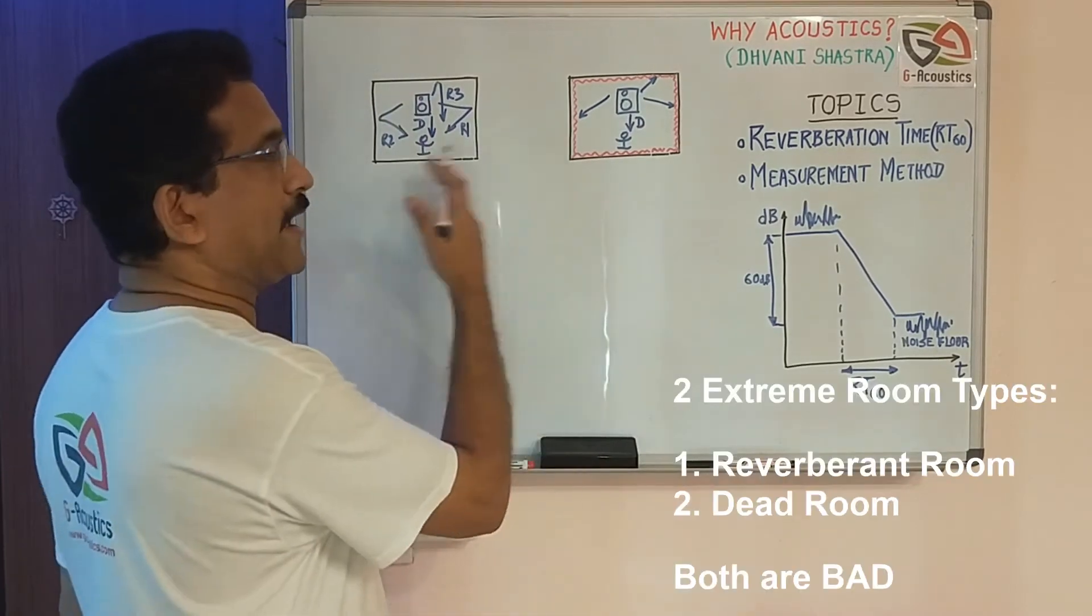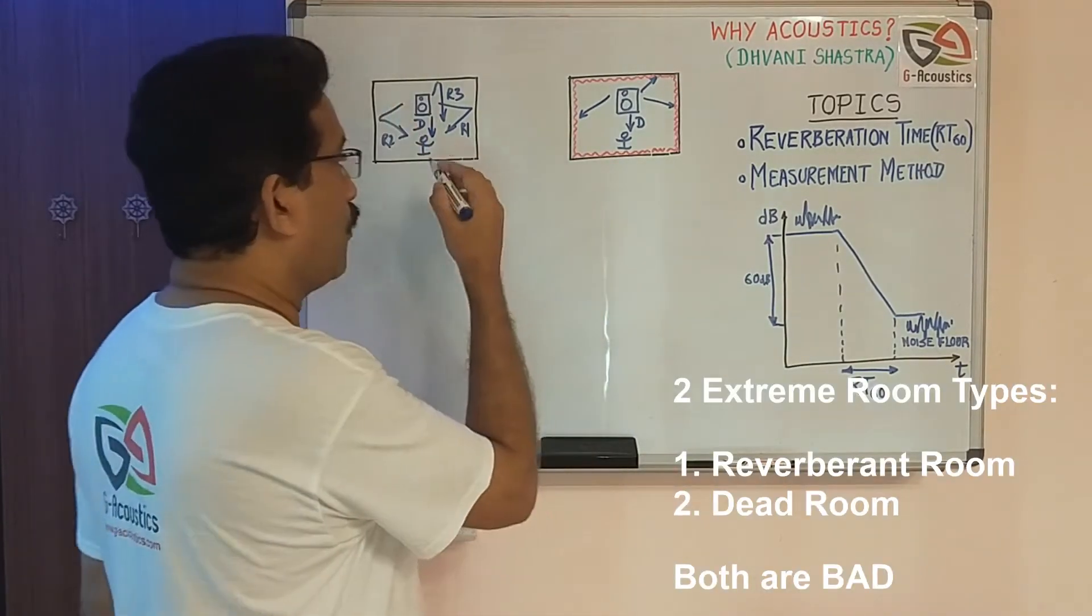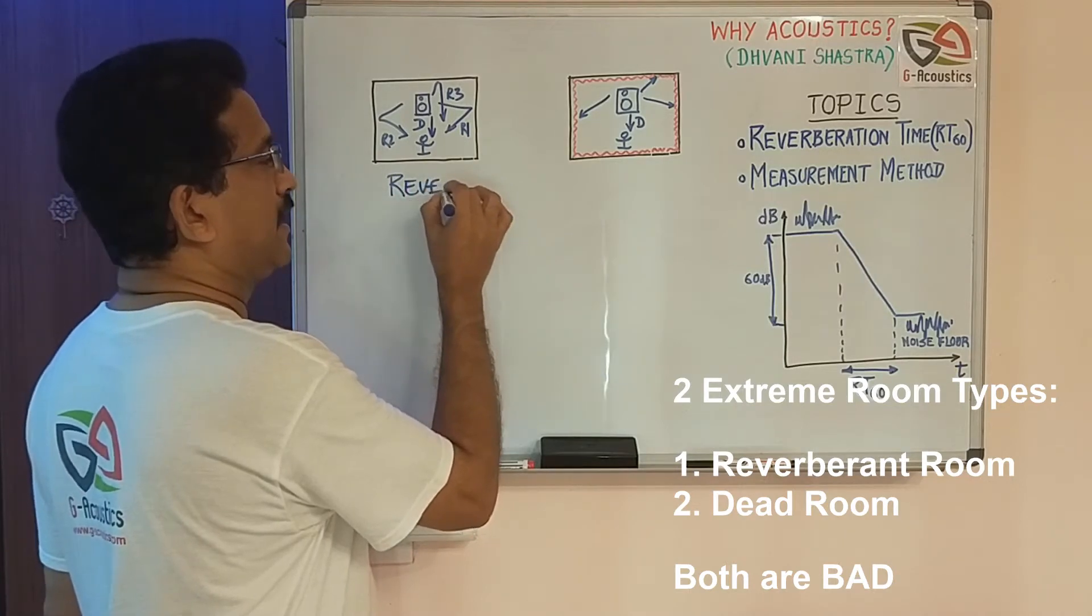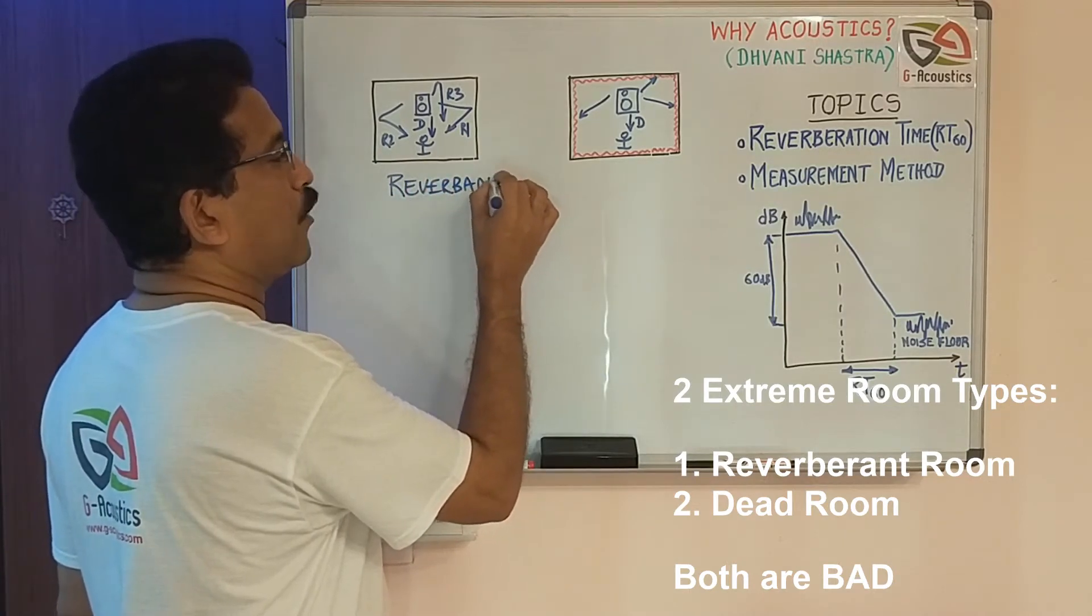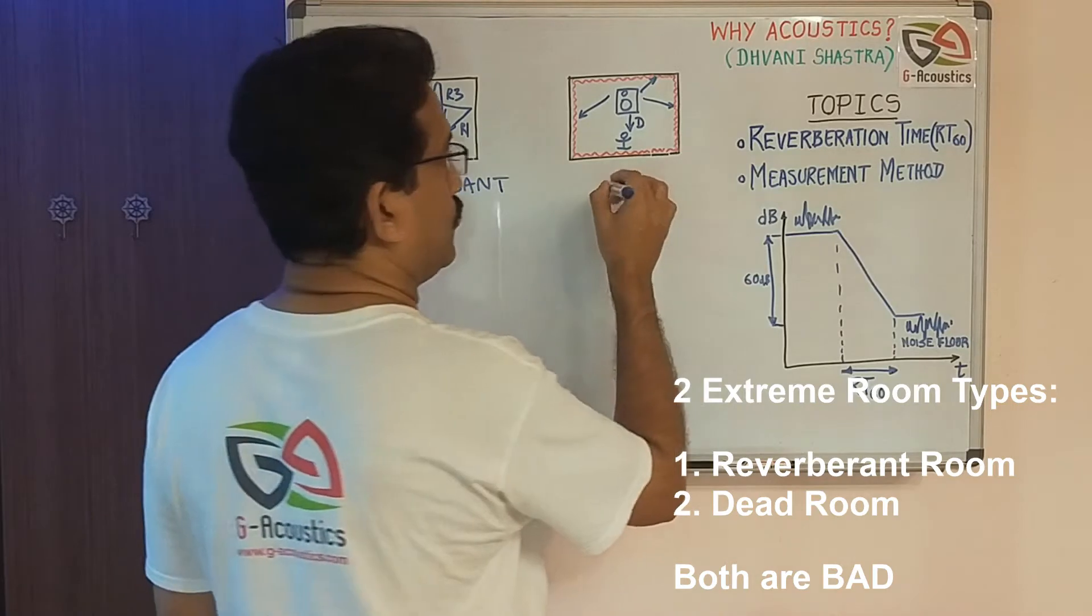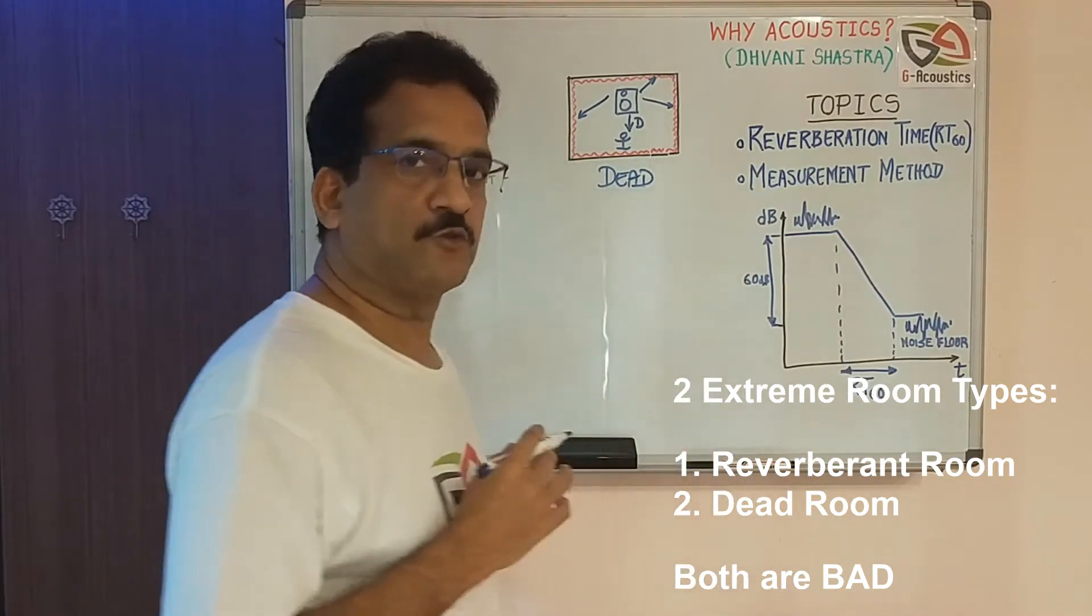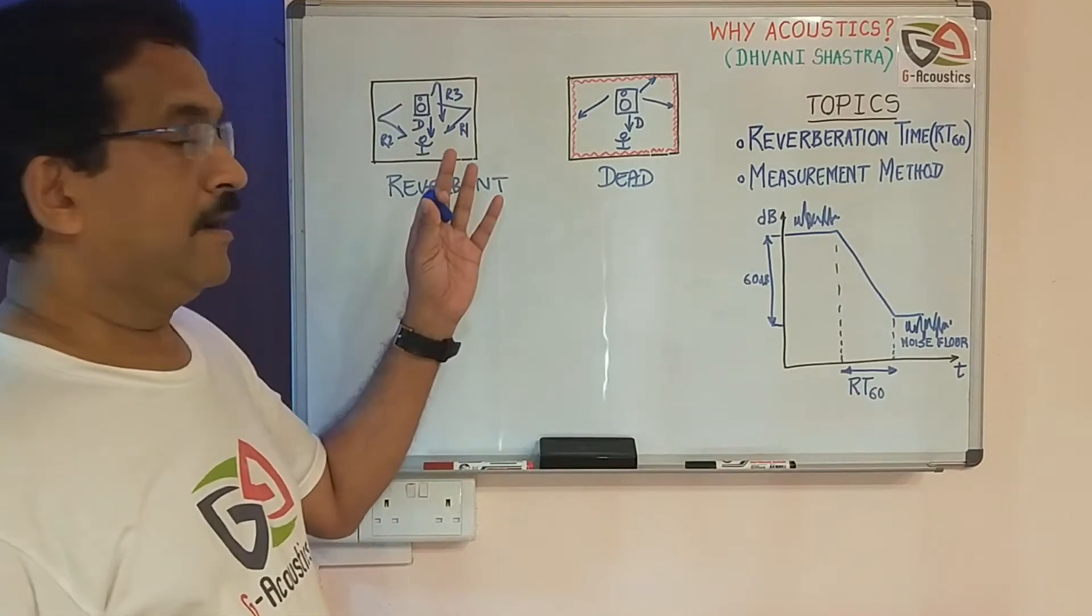These are two extreme conditions. One we call a reverberant room or echoey room. This room we call a dead room. Which is the right type of room? Neither this nor this.